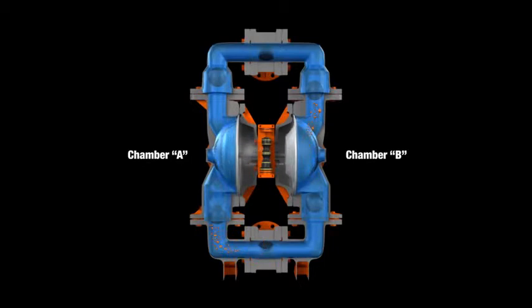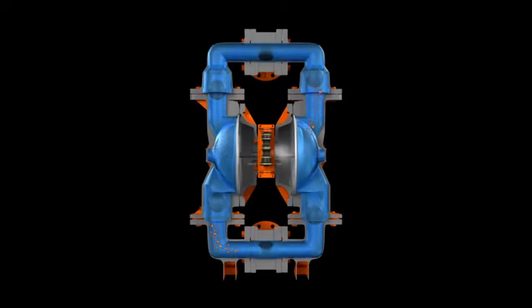When the pressurized diaphragm A reaches the limit of its discharge stroke, the air valve redirects pressurized air to the back of diaphragm B. This begins the discharge stroke of chamber B. The hydraulic forces developed inside of chamber B force the inlet ball onto its seat and the discharge ball off its seat. This condition allows fluid to flow through the pump discharge.